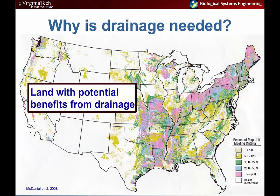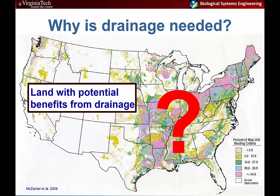This map shows the areas that could most benefit from drainage, driven mostly by soil properties and drainage characteristics. Although we consider the Corn Belt the areas most intensely drained in the United States, we can see significant areas of the mid-Atlantic that are forecasted to benefit from drainage.